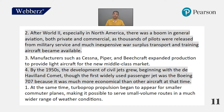After World War II, especially in North America, there was a boom in general aviation — both private and commercial — as thousands of pilots were released from military service and much inexpensive war surplus transport and training aircraft became available. Manufacturers such as Cessna, Piper and Beechcraft expanded production to provide light aircraft for the new middle class market. By the 1950s, the development of civil jets grew, beginning with the De Havilland Comet, though the first widely used passenger jet was the Boeing 707 because it was much more economical than other aircraft at the time. At the same time — meaning the 1950s — turboprop propulsion began to appear for smaller commuter planes, making it possible to serve small volume routes in a much wider range of weather conditions. With this, we come to the end of this video. Watch us for more videos. Thank you so much.